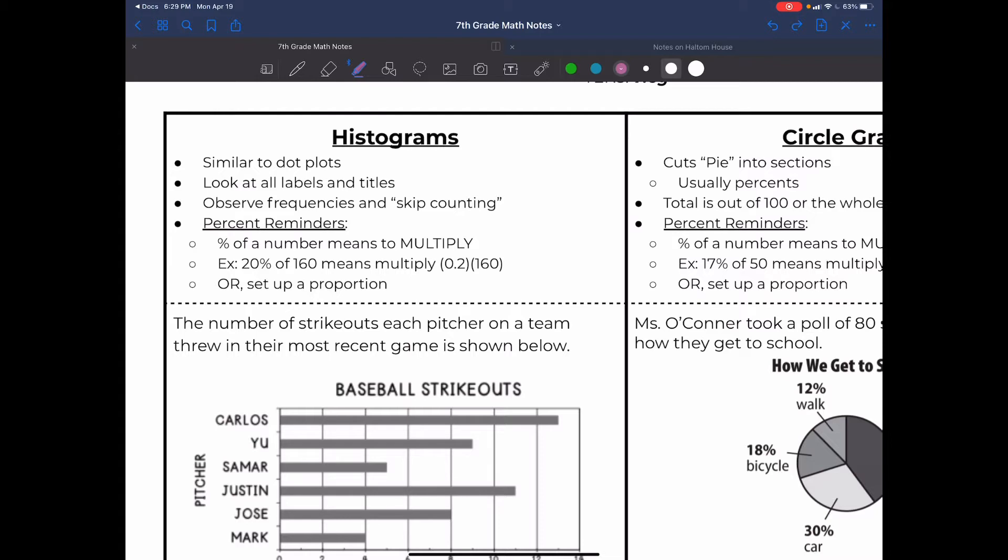We have some percent reminders because we usually deal with percents when we have graphs and diagrams. If there is a percent of a number, that means to multiply, right? Because 'of' means to multiply. So for example, 20% of 160 means we multiply 20% as a decimal, 0.2 times 160, or we set up a proportion. Percent out of 100 would be what out of your total, cross multiply divide. So in this case it would be 20 out of 100 is what out of 160, cross multiply divide.